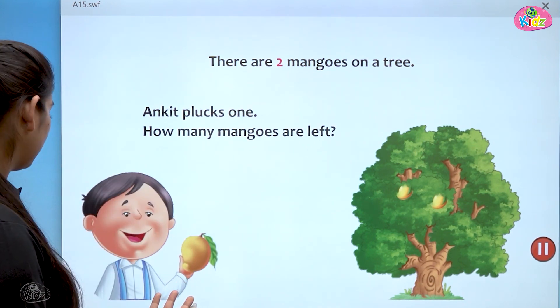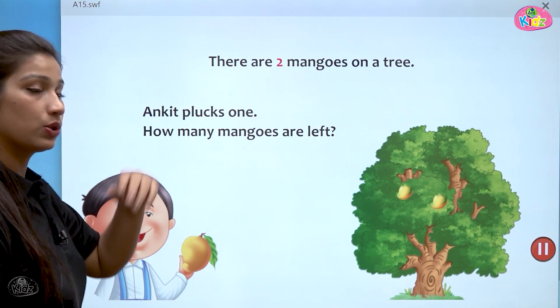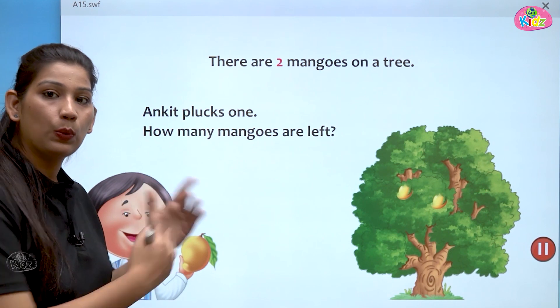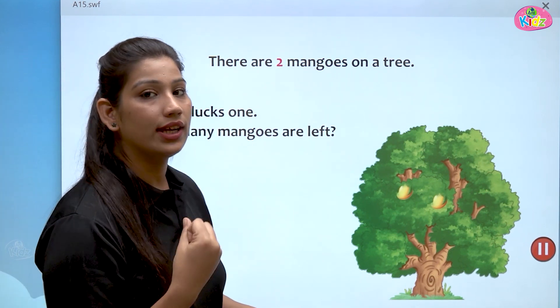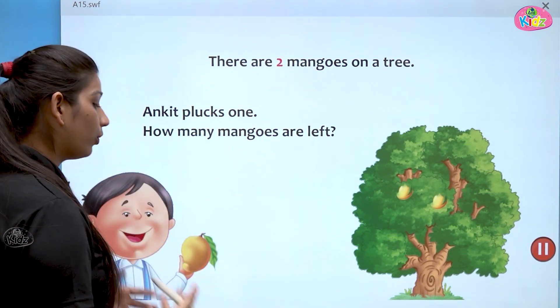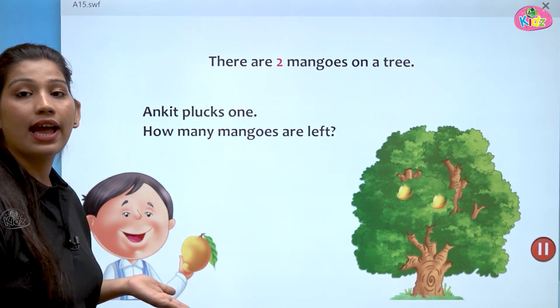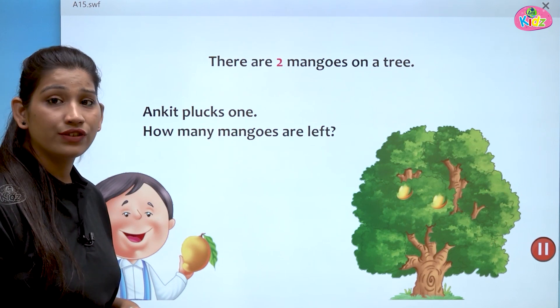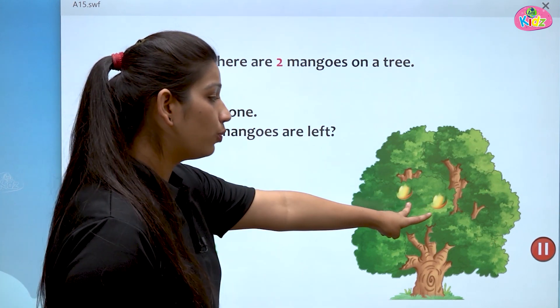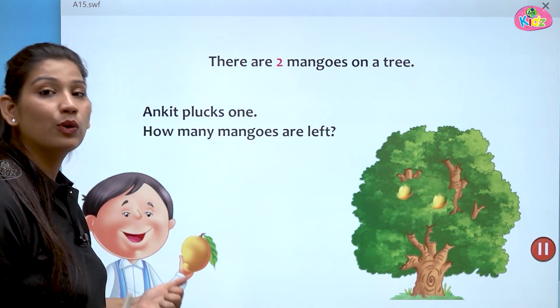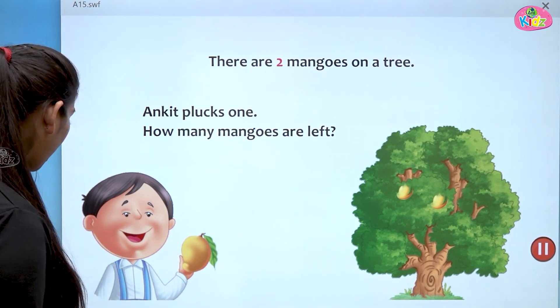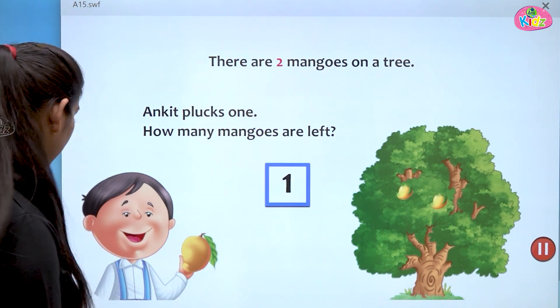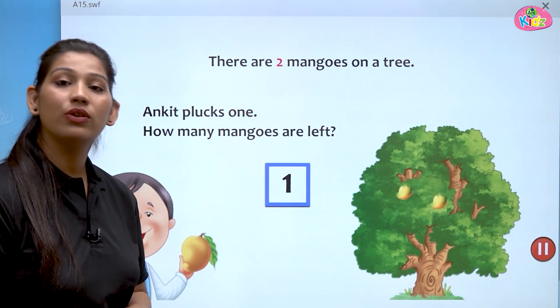There are two mangoes. Now, Ankit plucks one. This is a boy named Ankit. Ankit went and plucks one. Ankit ne one mango le liya. As you can see, Ankit has one mango. Now, how many mangoes are left? Ankit ne two mangoes mein se one mango le liya. Toh kitni mangoes bache? Yes, one mango left.